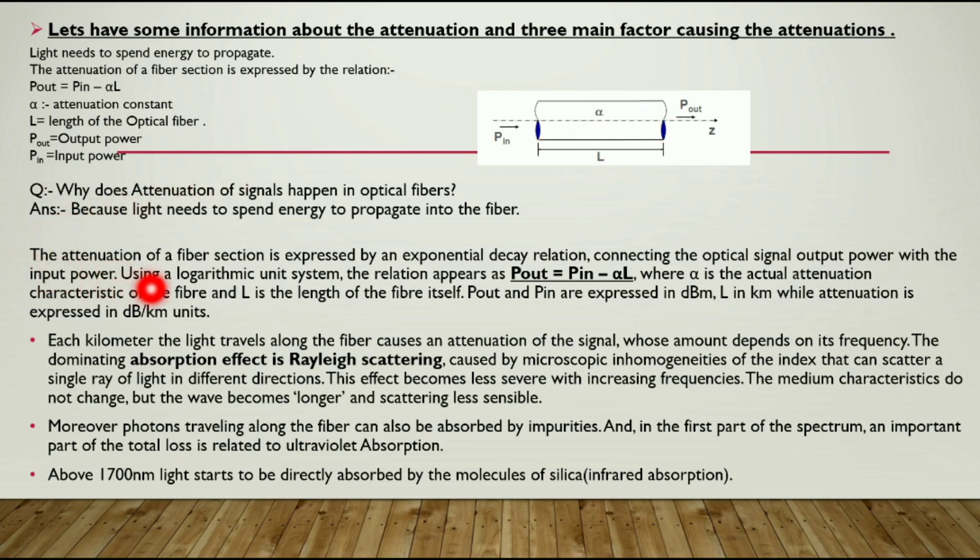The attenuation of a fiber section is expressed by an exponential decay relation connecting the optical signal output power with the input power. Using a logarithmic unit system the relation appears as P_out equals P_in minus alpha L, where alpha is the actual attenuation characteristics of the fiber and L is the length of the fiber itself.